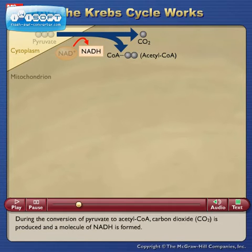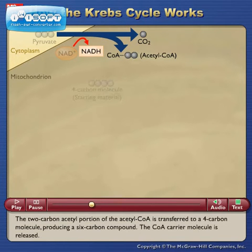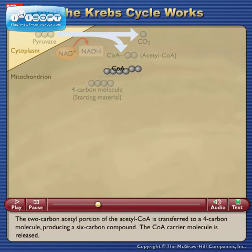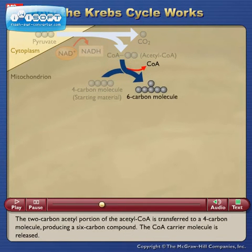During the conversion of pyruvate to acetyl CoA, carbon dioxide (CO2) is produced and a molecule of NADH is formed. The two-carbon acetyl portion of the acetyl CoA is transferred to a four-carbon molecule, producing a six-carbon compound. The CoA carrier molecule is released.